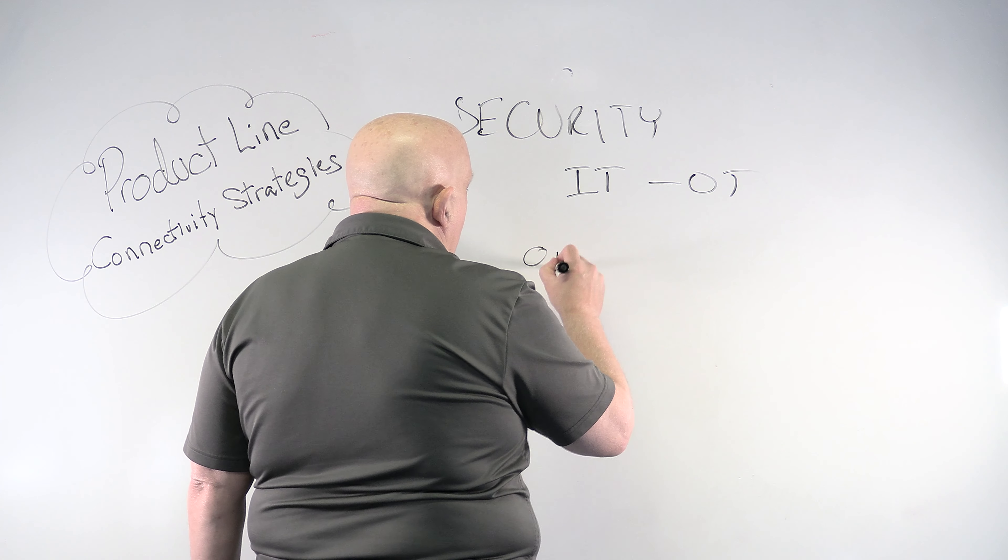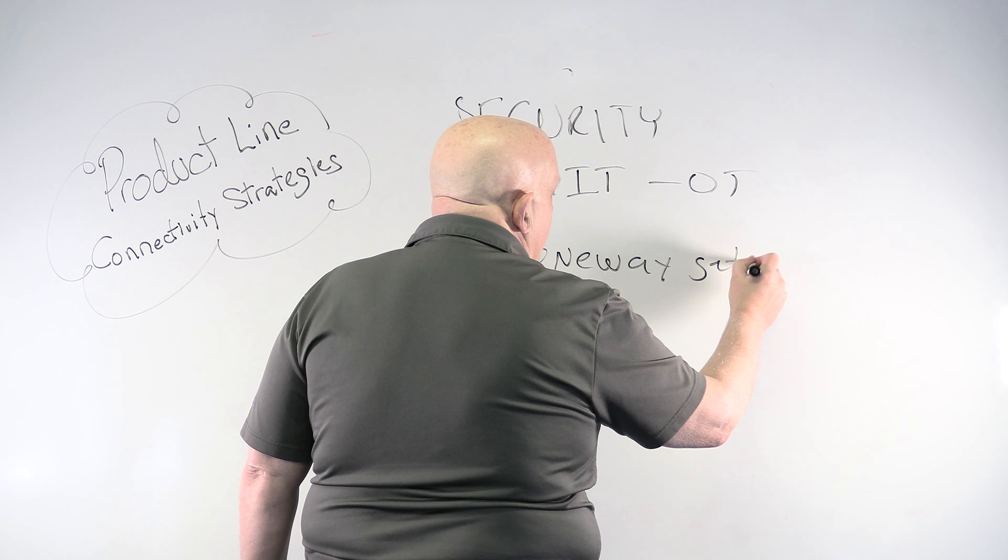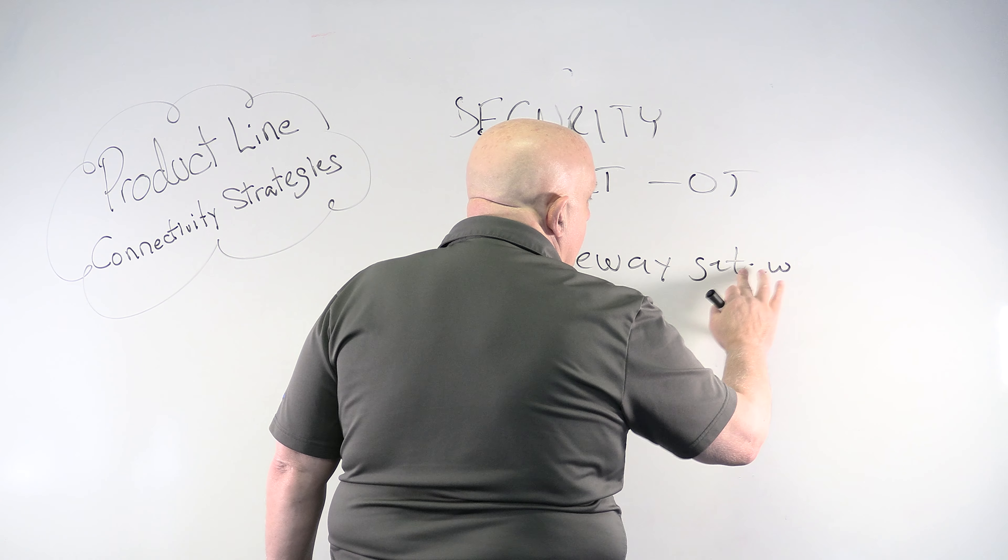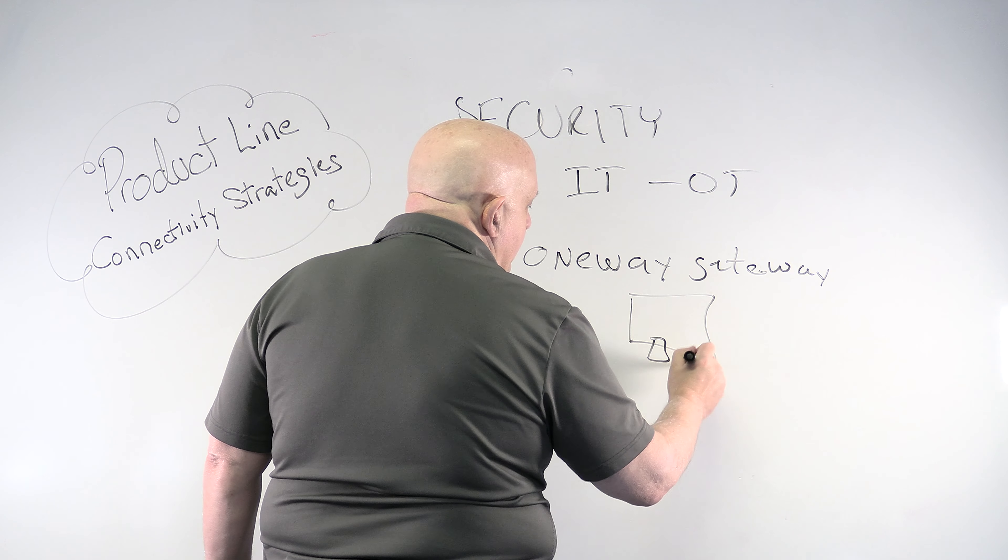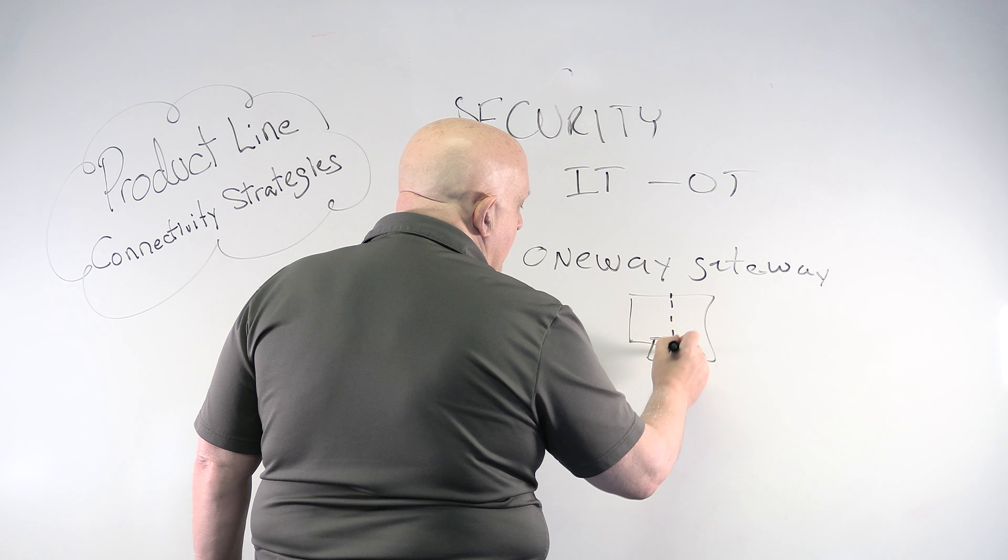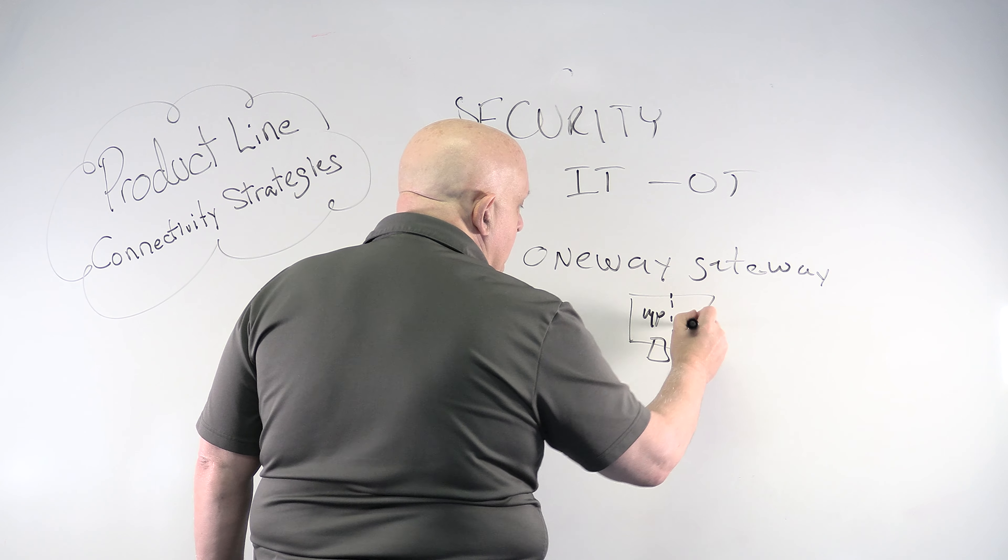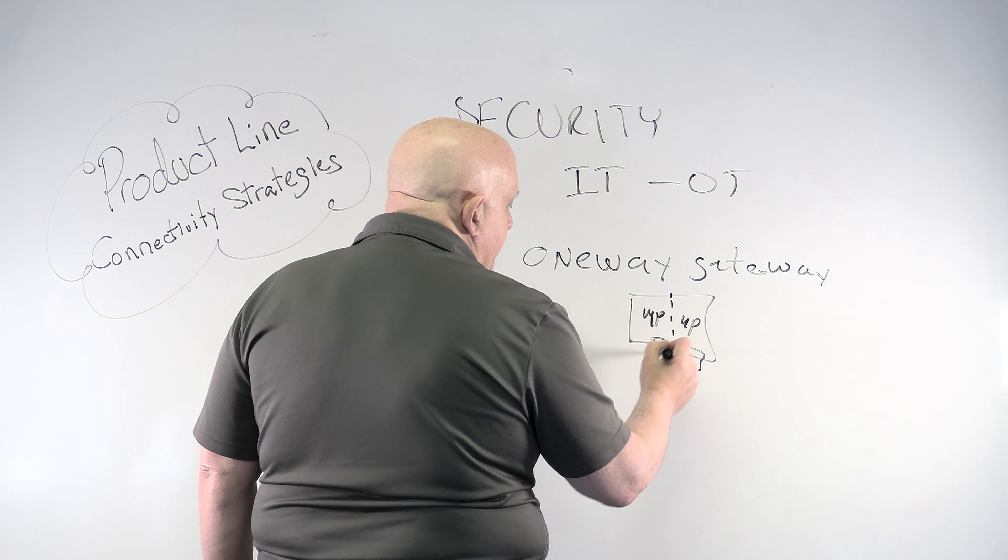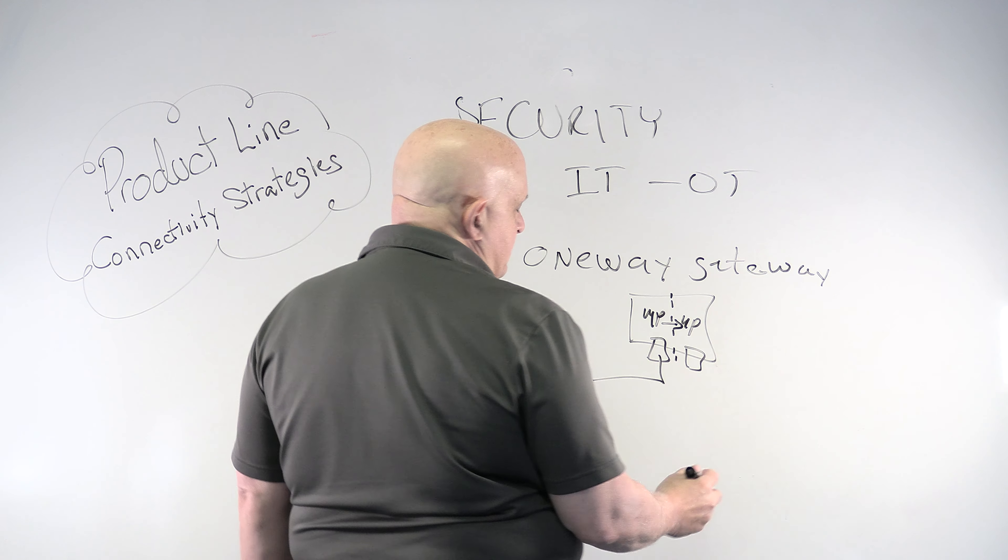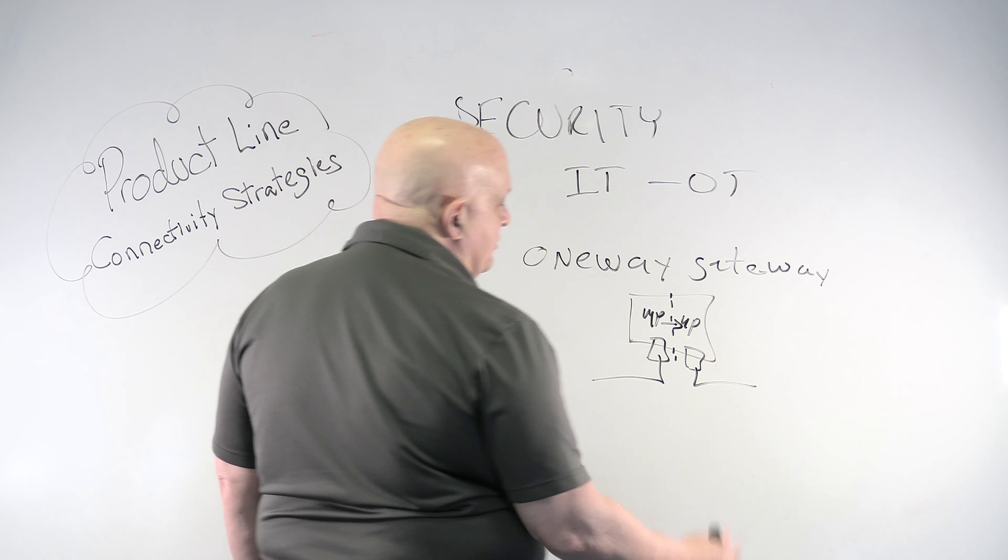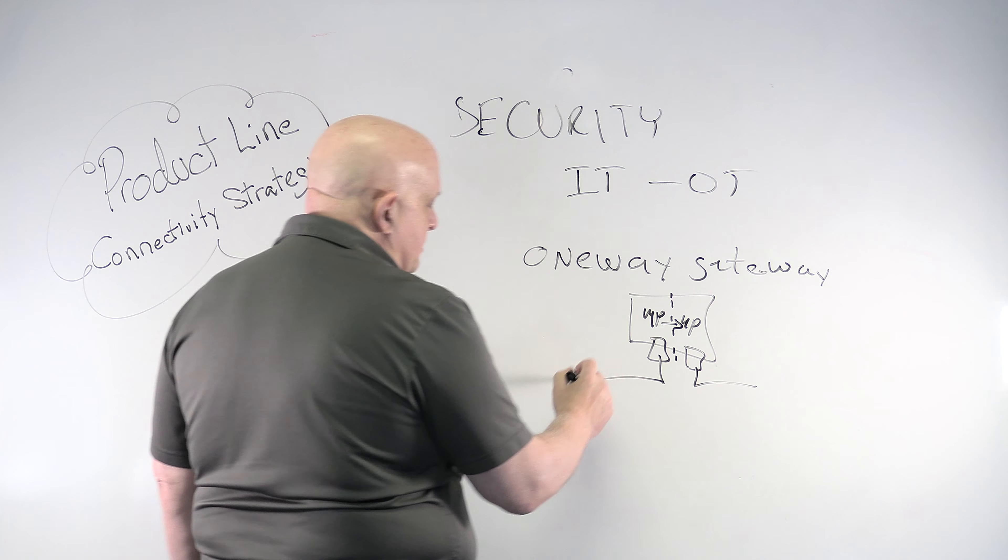How do you do that? Well, there's a couple of different ways to do that. The ways I like to do that are one-way gateway. A one-way gateway is a device like I just talked about before that has those two NICs in it, but they are on different microprocessors. So there's microprocessor here, microprocessor here, and those things, the OT microprocessor can only send data to the IT microprocessor.